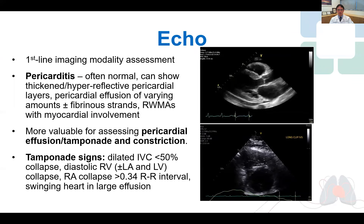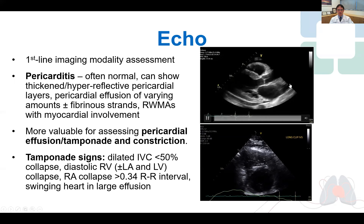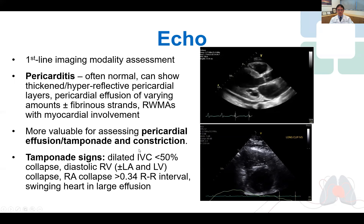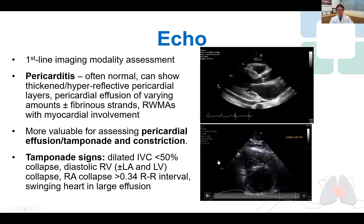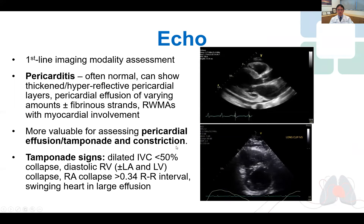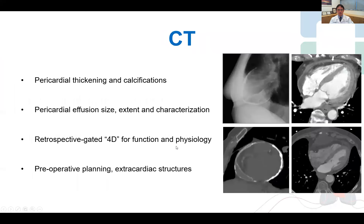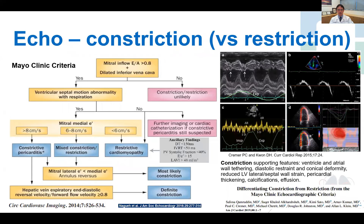More valuable for echocardiography is the assessment of pericardial effusion seen on the top right, signs of pericardial tamponade listed at the bottom, and also signs of pericardial constriction.